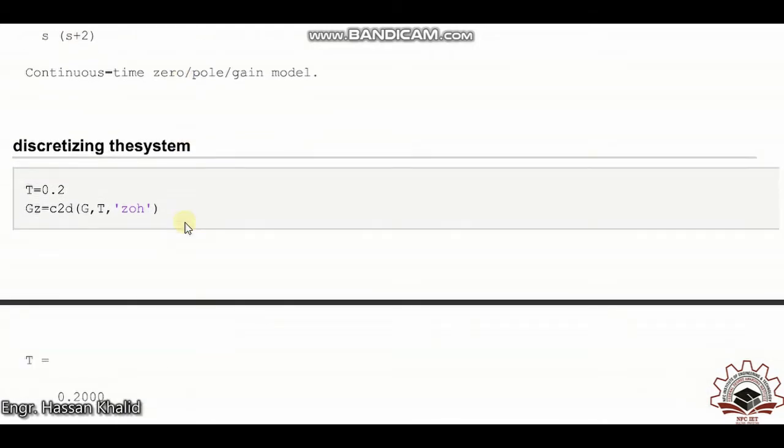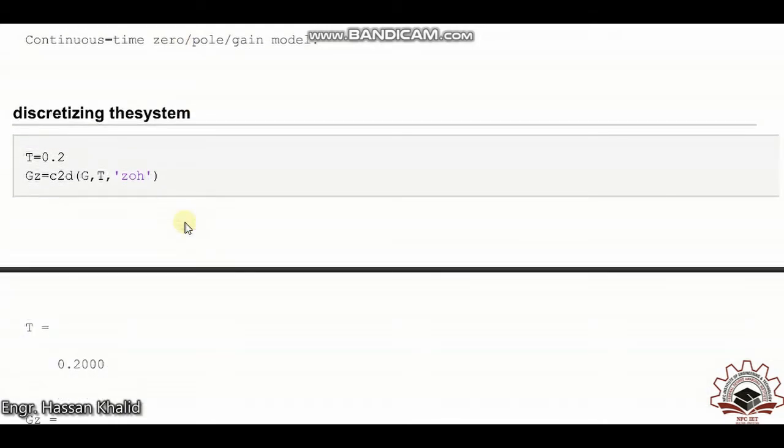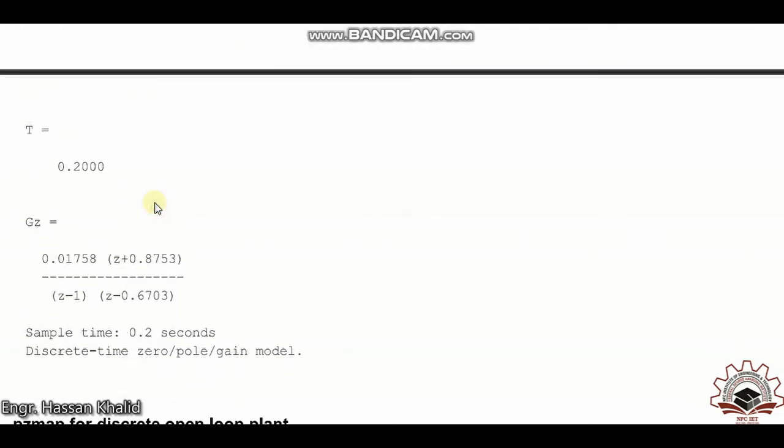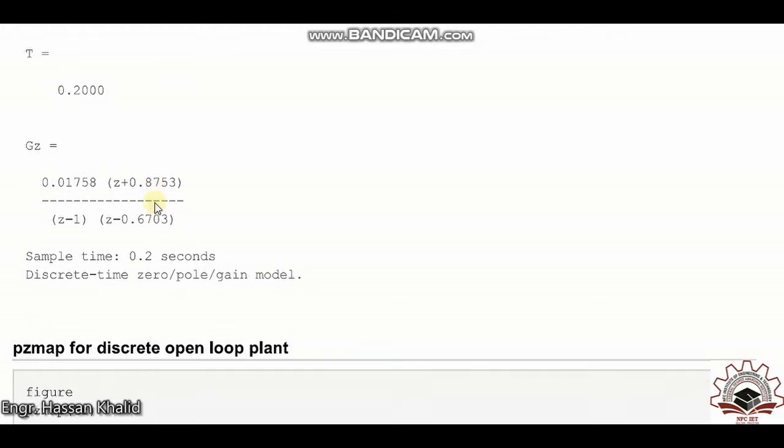Now let's discretize the system at the sampling time of 0.2 seconds as defined in the question. Using zero order hold, we obtain the open loop impulse transfer function G of z, which is exactly the same as the question: 0.01758 times z plus 0.8753.